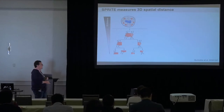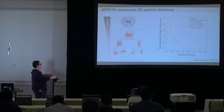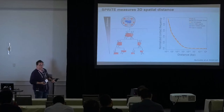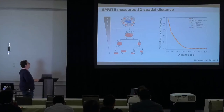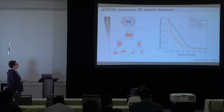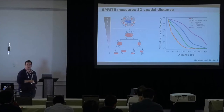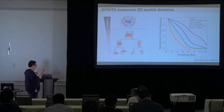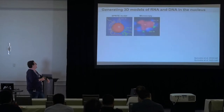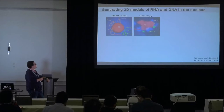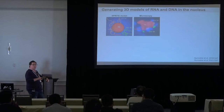SPRITE accurately measures DNA-DNA interactions comparable to Hi-C across compartments, TADs, and loops; RNA-DNA interactions such as XIST on the inactive X chromosome and U1 snRNA globally; and RNA-RNA interactions such as splicing snRNAs U1, U2, U4, U5, U6 enriched at introns of nascent pre-mRNAs, while translation-associated factors 18S, 28S, 5.8S, and 5S are depleted over introns and enriched over coding regions of mature mRNAs. We can also reconstruct 3D distances from cluster sizes.